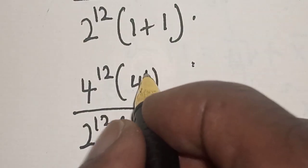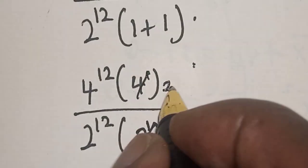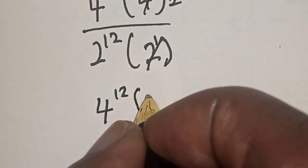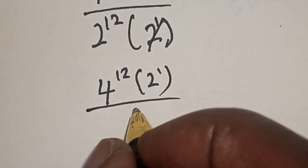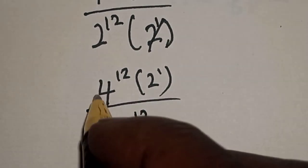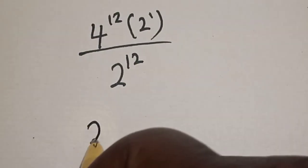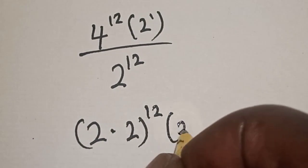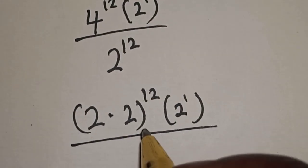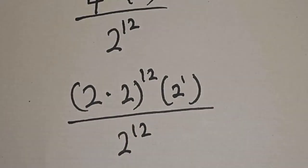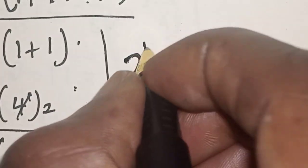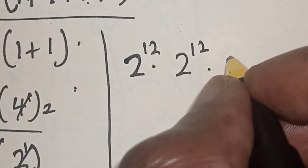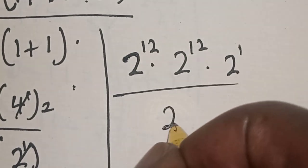This simplifies to 2 to the power 1 and 4 to the power 1 in the respective factors. We have 4 to the power 12 times 2 to the power 1, over 2 to the power 12. Now, 4 to the power 12 can be split as 2 multiplied by 2, raised to the power 12, which equals 2 to the power 12 multiplied by 2 to the power 12. So we have 2 to the power 12 times 2 to the power 12 times 2 to the power 1, over 2 to the power 12.